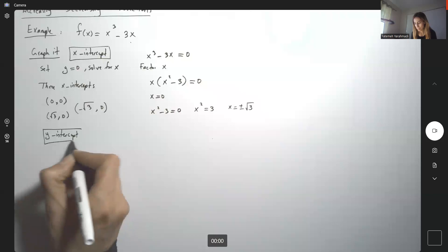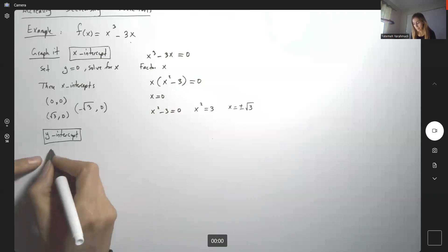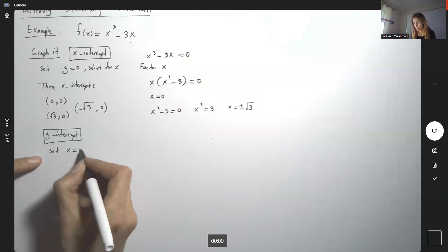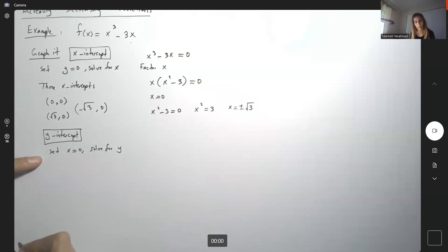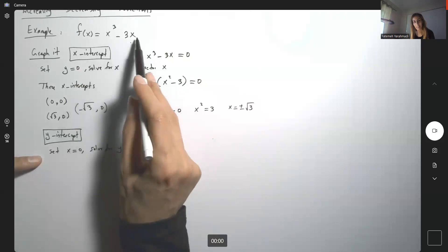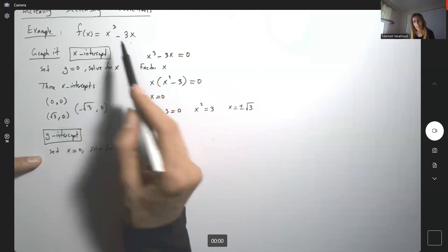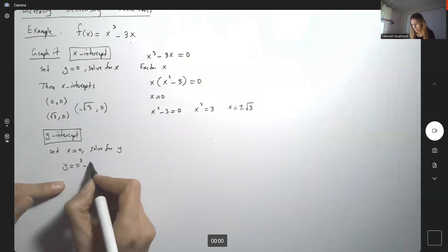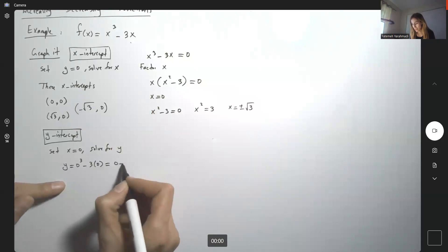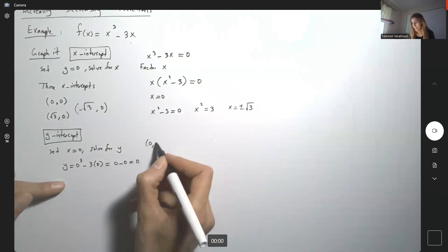To find the y-intercept, it's easy. Set x = 0 and solve for y. When x = 0, x³ - 3x becomes 0³ - 3(0) = 0 - 0 = 0. So your y-intercept is at the origin.